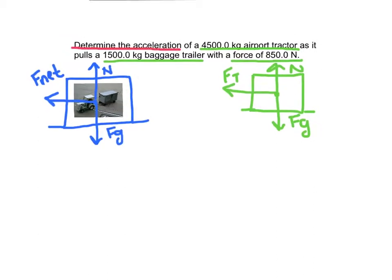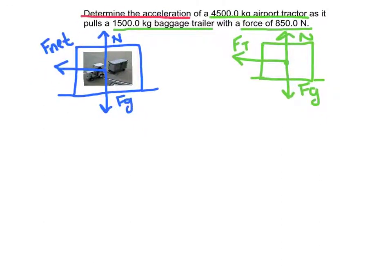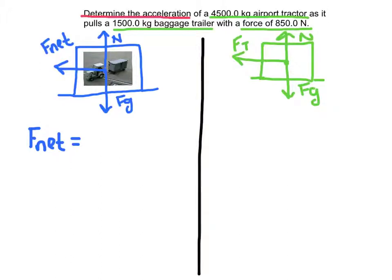Now that I have my free body diagrams — always the second step after underlining information when dealing with forces — I will write down the equations to work with. F net equals the sum of all forces acting on the object. The normal force and gravity cancel each other, so all I am left with is the force propelling the object, which I have labeled net force. This equals MA, mass times acceleration. I do not know the acceleration yet, but I do know the mass of the system.